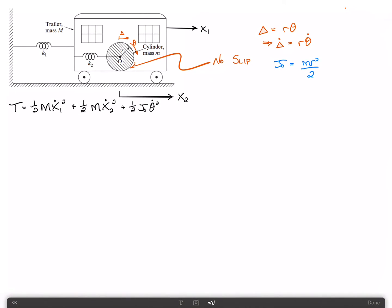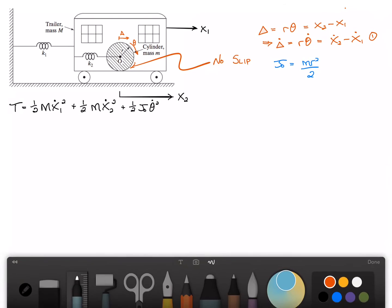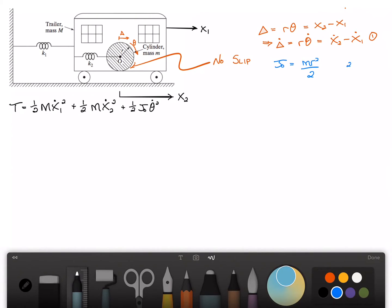I'm also going to write up here that Delta, which is equal to r theta, can also be written as x2 minus x1. Therefore Delta dot would be x2 dot minus x1 dot. We'll call this equation 1, and the blue one equation 2.